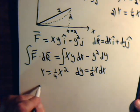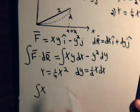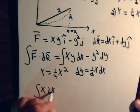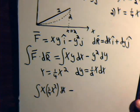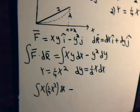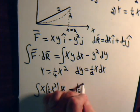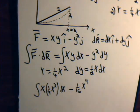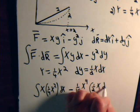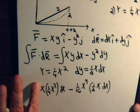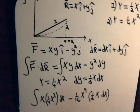So, here we will have the line integral x times y, which is one-fourth x squared dx minus y squared. That would be this squared, so that would be one-sixteenth x to the fourth. And dy is this, one-half x dx. Let's make our integral sign a little bit bigger. And again, we are integrating from x equals zero to x equals two.